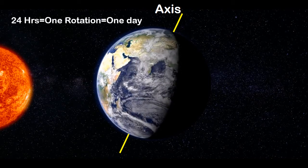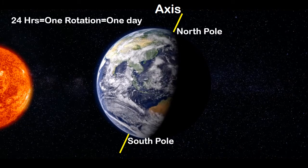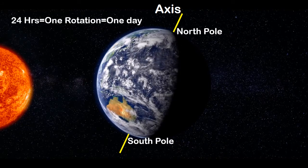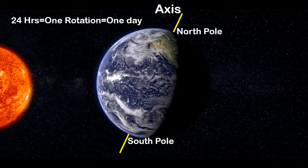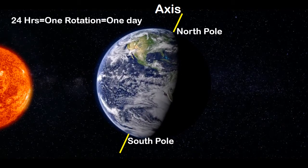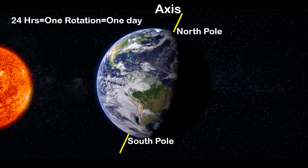This axis runs from the North Pole to the South Pole, and it takes 24 hours to complete one rotation, which is why there are 24 hours in one day.